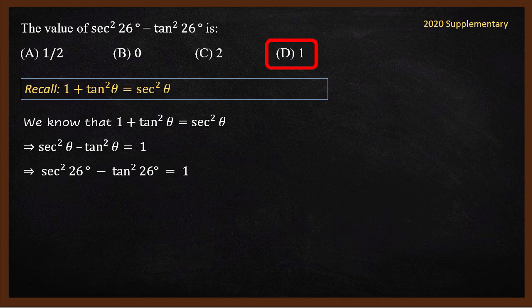We solved 10 multiple choice trigonometry questions from various model papers and previous examination papers. Hopefully you got an idea of what kind of questions are asked — identity questions, complementary angle questions, value of key angles questions, and ratio questions. In the next video we will see the other chapter. Thanks for watching. See you soon. Bye.